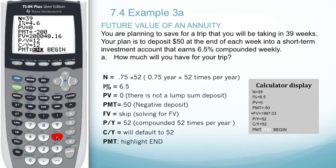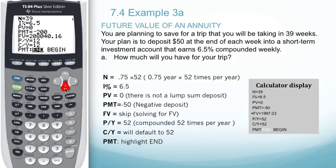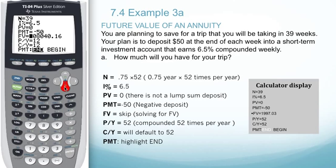Our interest rate is going to be 6.5%. We don't have any present value — there is no lump sum deposit. Our payment is going to be $50, so we'll put in a negative 50 to show it coming out of our pockets. Skip future value for now, going down to the payments per year and the compounding periods per year. Since there are weeks, that will be 52.